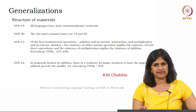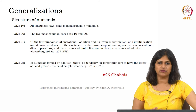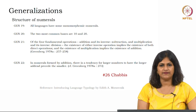Generalization 20 says the two most common bases in numeral systems are ten and twenty. Most languages will have at least these two common bases. Generalizations 19 through 22 are all based on the structure of numerals, while generalization 18 was about existence.